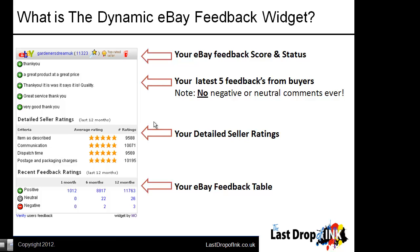I've chosen this eBay ID at random - that could be your eBay account we're looking at right now in that widget. At the top we can see Gardeners Dream UK, there's a link to their account, we can see their feedback score, their eBay star, that they're a top rated seller, and they've got an eBay store. If they have an about me page, that icon would appear there as well, and in the configurable options you can choose to show the reviewer link.